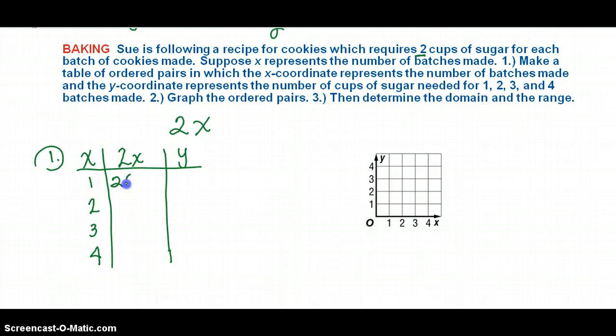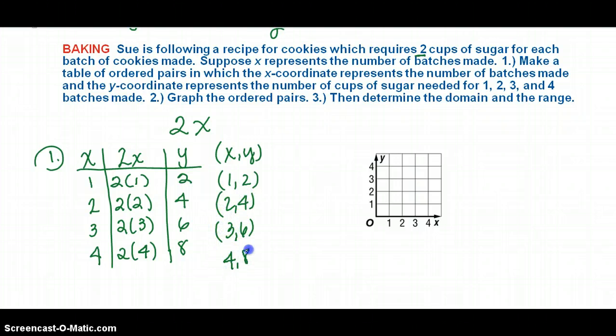And this is the expression that I'm using because it's two cups of sugar per batch. So for one batch, I'll only need two cups of sugar because two times one is two. For two batches, I'm going to need four cups of sugar. For two batches, if it's two each, that's four cups of sugar. And then two times three, I'll need six cups. And two times four, I'll need eight cups. So the result here for my ordered pairs are 1, 2, 2, 4, 3, 6, and 4, 8.